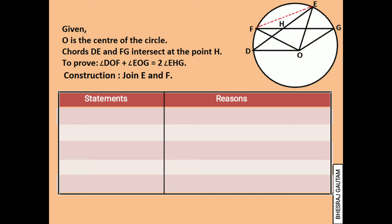From the relation between the inscribed angle and central angle, we can write that central angle DOF is double the inscribed angle FEH, as both are standing on the same arc DF. Here angle FEH is the same as angle FED.